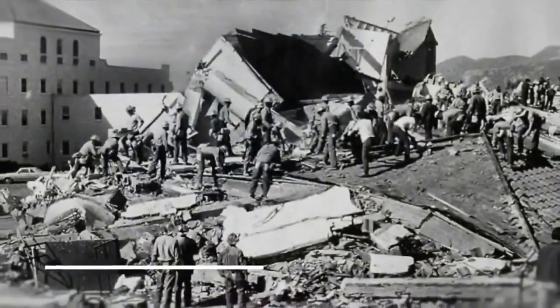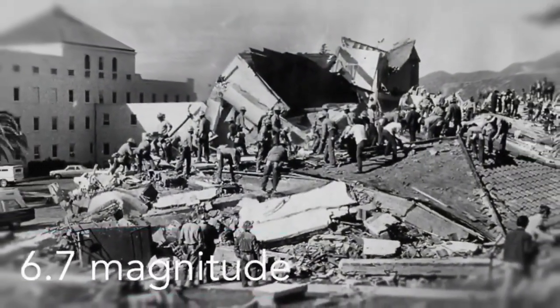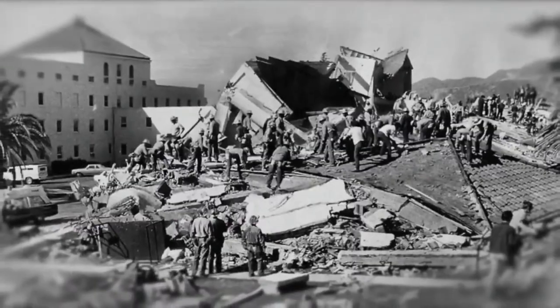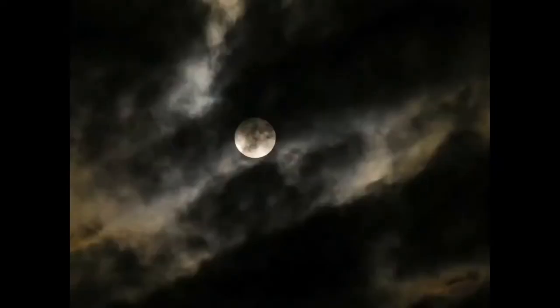An earthquake of magnitude 6.7 on the Richter scale occurred on February 9, 1971 in the foothills of the San Gabriel Mountains in Southern California. Fifteen hours later, a total lunar eclipse took place.